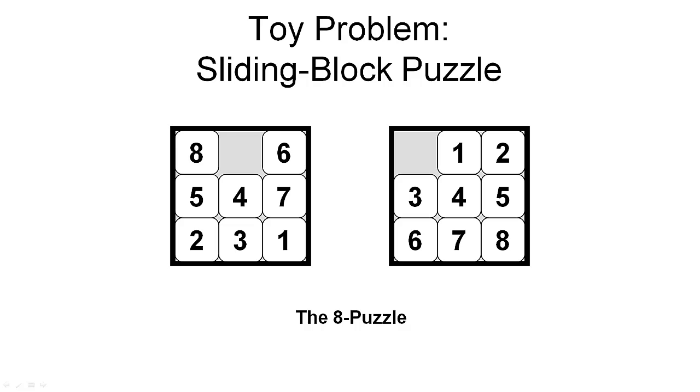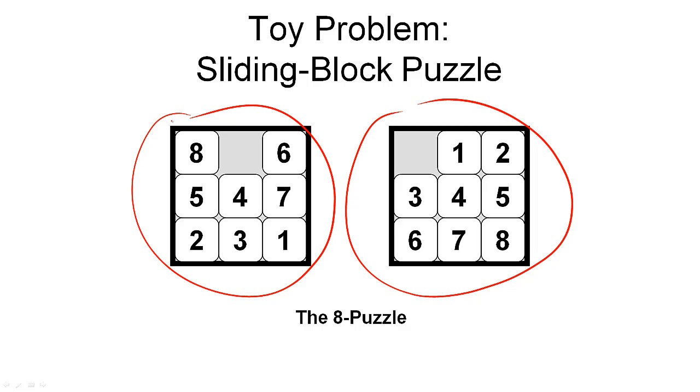The tiles themselves are numbered 1 through 8, and our task is to bring them into the right order. The right order is shown here on the right, and this could be some initial state from which we start. To formulate this as a search problem, we have to ask what is the initial state.